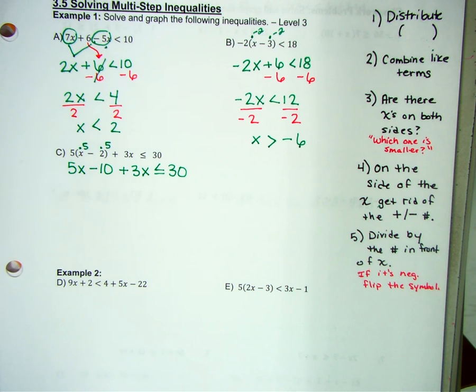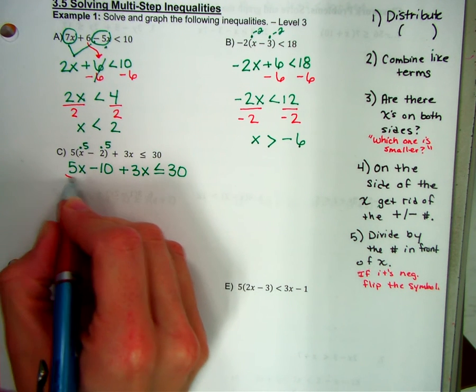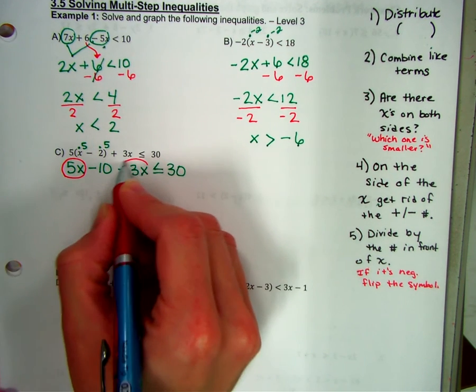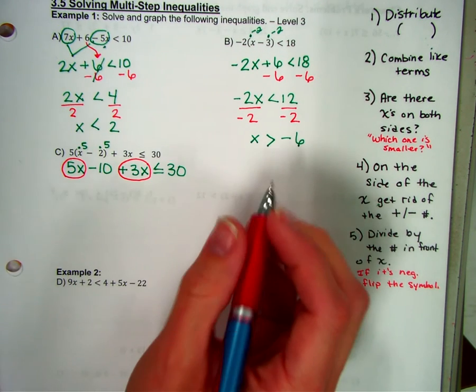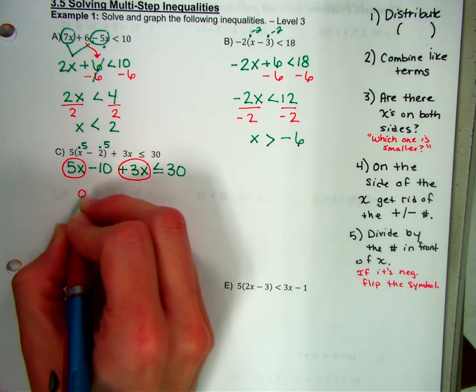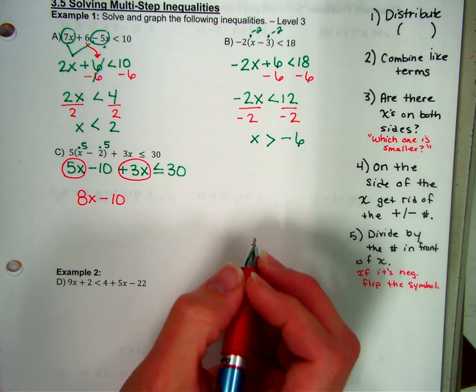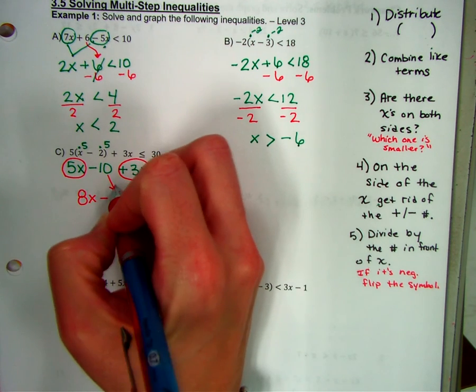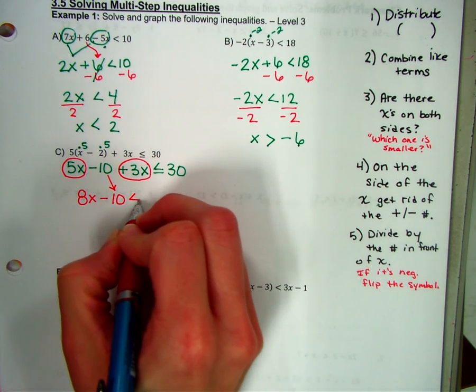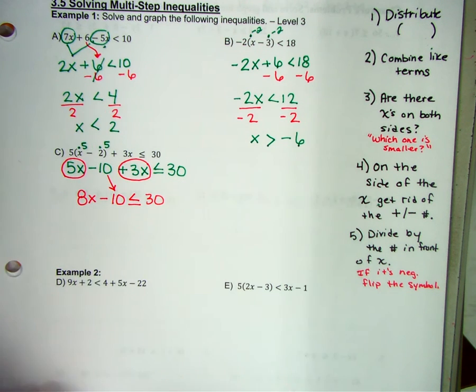Step two says combine. Is there anything that I can put together? Are there more than 1x? Is there more than 1x on the same side? Okay. So over here on the left, I have a 5x and I have a 3x. 5 and 3 is 8x minus 10. That just comes right down to the problem. And then rewrite less than or equal to 30.